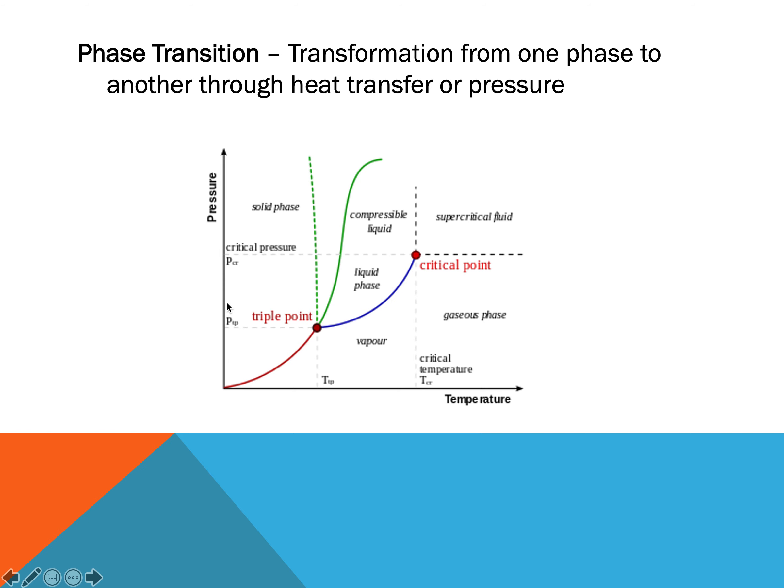Then as we change the pressure, you can see that these points change. So if I am at very low pressure, I'm going to go from a solid to a liquid or a solid to a gas depending on where I fall on my graph.